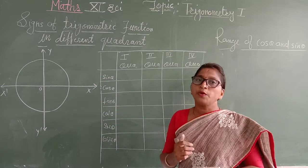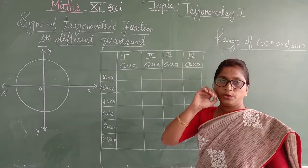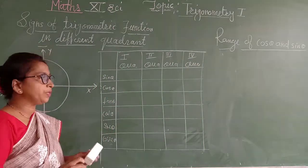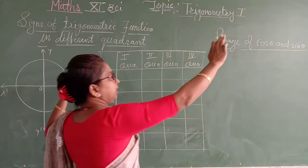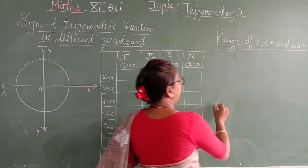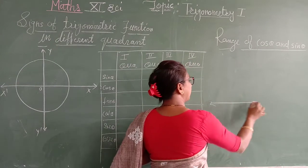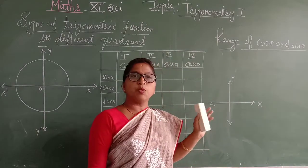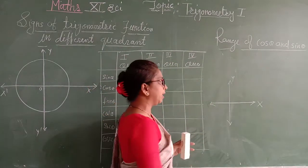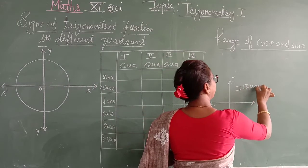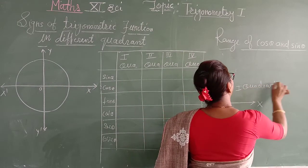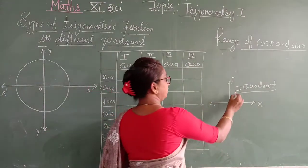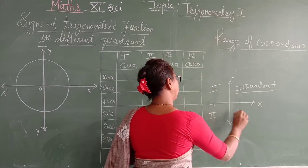First of all, let us see what is meant by a quadrant. You already studied quadrants in linear equations in two variables. Consider this as a plane where we draw a horizontal line which is the x-axis and a vertical line which is the y-axis. Both axes divide the plane into four parts. Each part is called a quadrant. So how many quadrants do we get? We get four quadrants: first, second, third, and fourth.